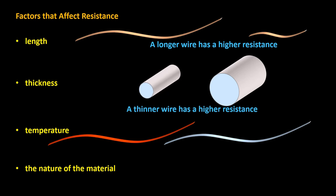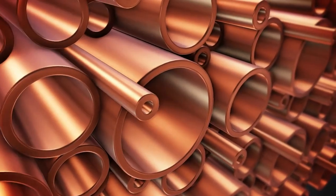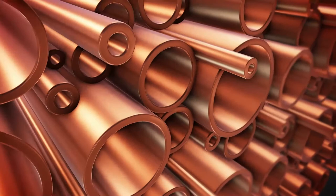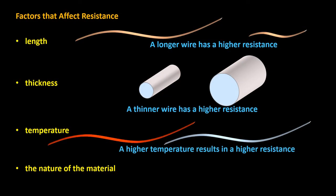A thinner wire has a higher resistance than a thicker wire, because the current can flow more easily in a thicker wire, just like water can flow more easily through a wider pipe than through a thinner pipe. A higher temperature results in a higher resistance, because at higher temperatures, the atoms vibrate more vigorously, so electrons have a harder time going through.